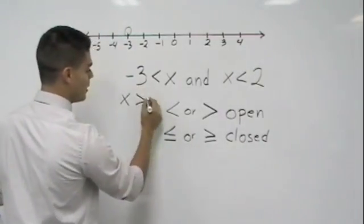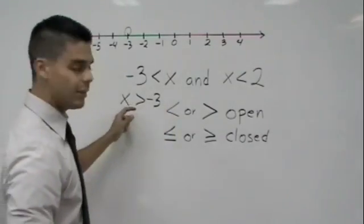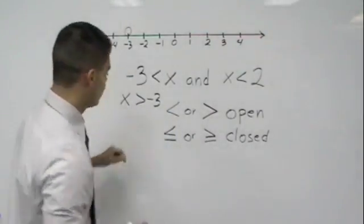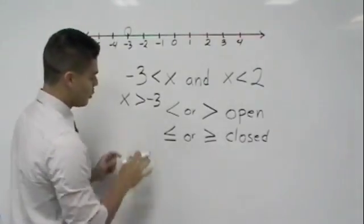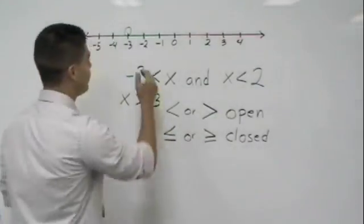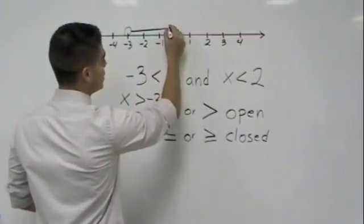And then I bring my negative three to the other side. And what does that do? It helps me know what way to shade. Meaning if I follow the way the arrow's pointing, the arrow's pointing that way, therefore I'm going to shade to the right.